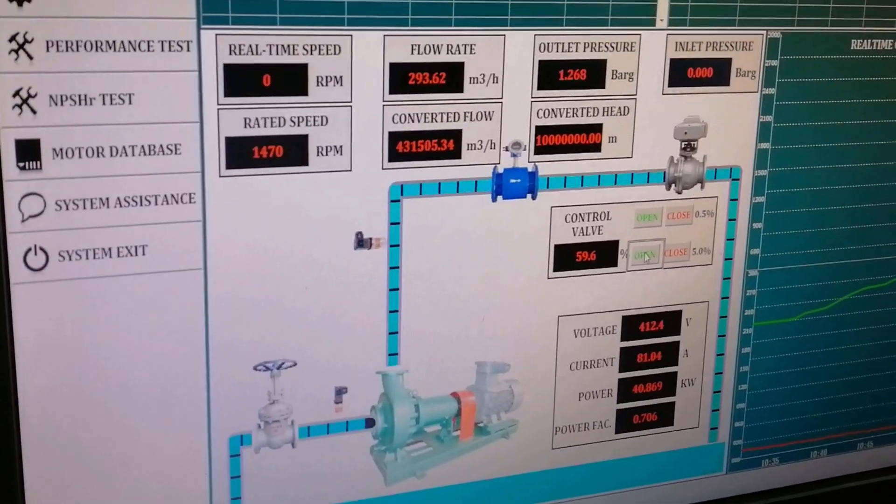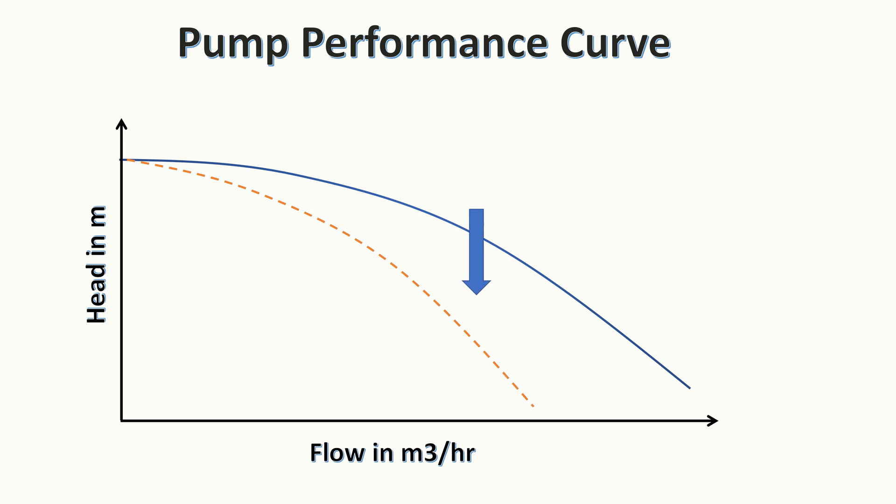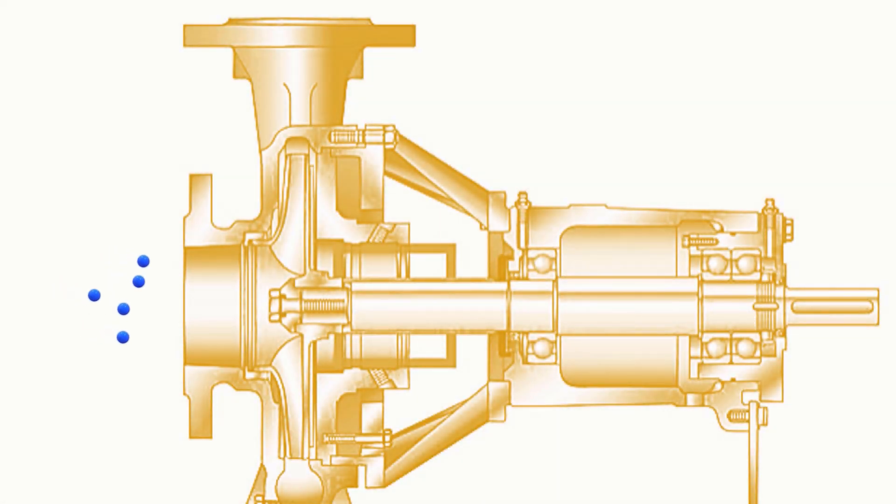While throttling the valve, if you see no change in the noise level and performance is still out of the curve, then it is due to air entrainment.